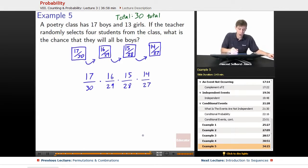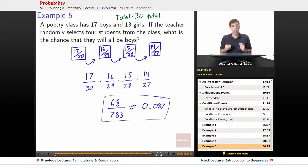We work that out and that winds up simplifying to the not that simple looking 68 over 783, which comes out approximately to 0.087. So we have a little bit less than a 10% chance, 0.087 chance of managing to pull all boys if we pull four students.